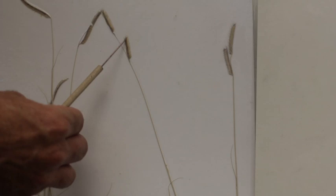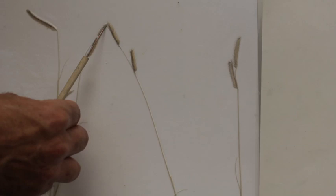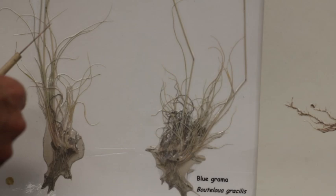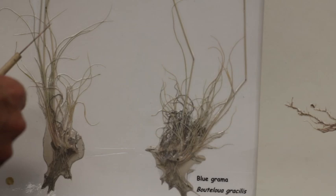If you look at blue grama it has this eyelash that's a one sided raceme with multiple spikelets per floret. Big and long. And the leaves are basal, very similar to buffalo grass.